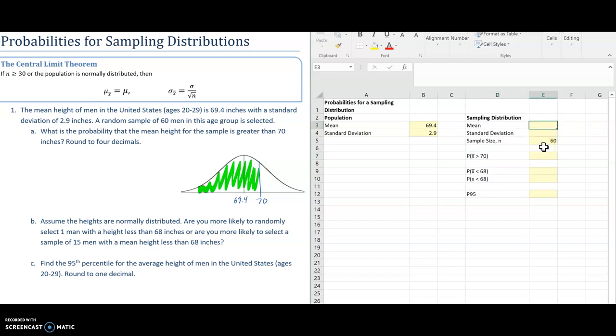So first I'll start by calculating the mean of the sampling distribution. Because my sample is greater than 30, I know that the population mean will be the same. So I can just hit equals and borrow from that guy over there.